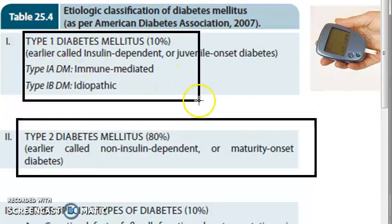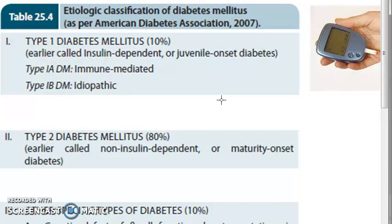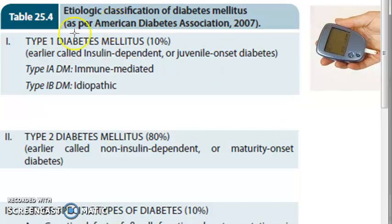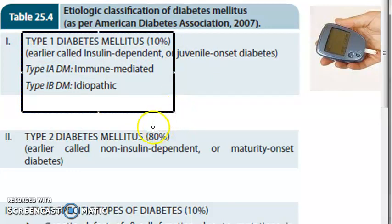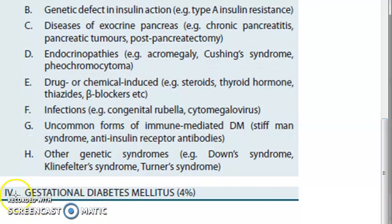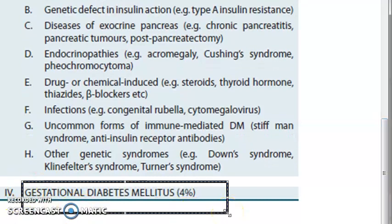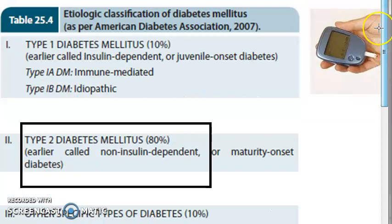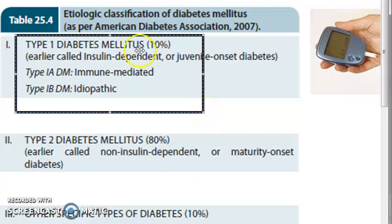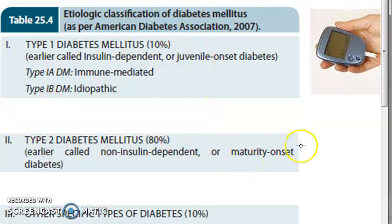Type 1 is insulin dependent - if you give insulin it's treated. Earlier it was called juvenile onset diabetes because it was seen more in younger people. Gestational diabetes mellitus comes only with pregnancy and it goes away after pregnancy. Type 1 is insulin dependent and type 2 is non-insulin dependent.